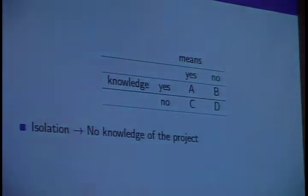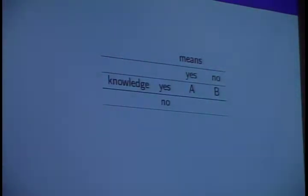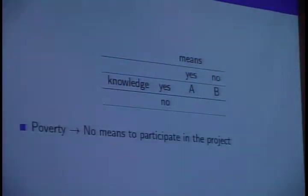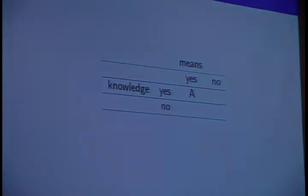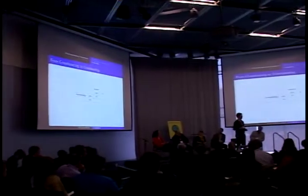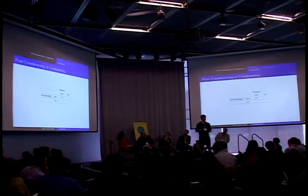In the Congo, a lot of places are isolated, so there's no knowledge of the project. Very nice that we've got the cell phone where people can send messages to, but nobody will ever know about it. That gets a very large chunk of the population away. Then the means — needless to say, it's a very poor area — so there's no means to participate for most people. So this is what we're left with: a very, very small and unrepresentative part of the crowd. Goodbye, high-quality data.